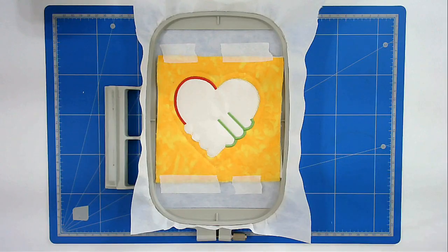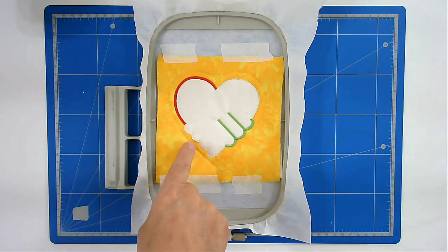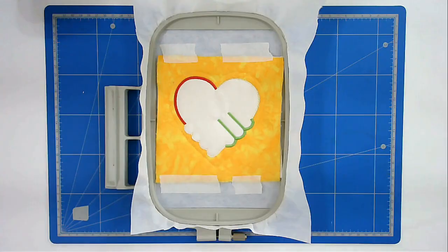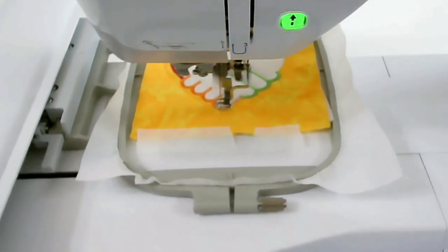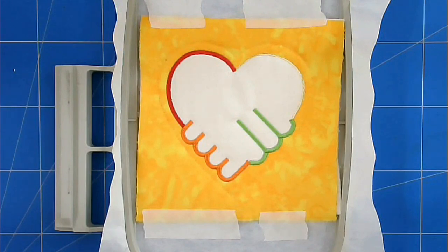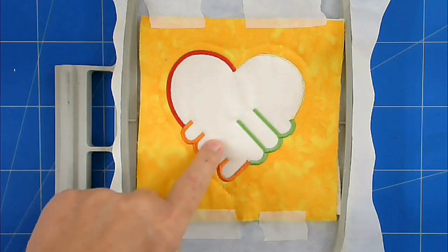Next is round number six and that's going to do the satin stitch halfway round the fingers on the left here. I've changed my thread to yellow and next I'm going to stitch round number seven and that's going to do round to the top of the fingers here.